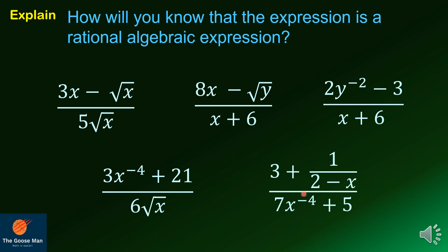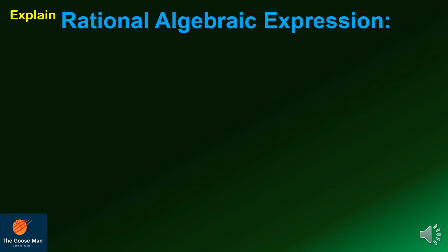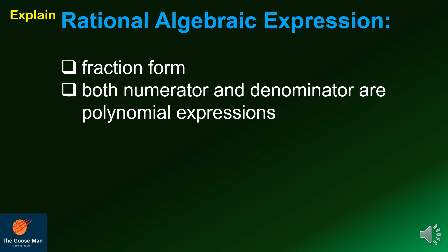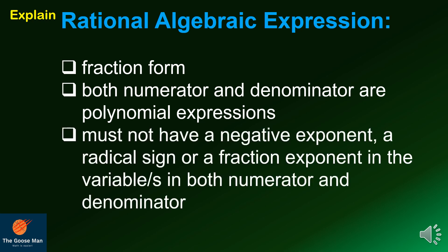This expression is not a rational algebraic expression because the denominator 7x raised to negative 4 plus 5 has a negative exponent. To be considered a rational algebraic expression, it must be in fraction form, both numerator and denominator must be polynomial expressions, and it must not have a negative exponent, a radical sign, or a fraction exponent in the variables in both numerator and denominator.